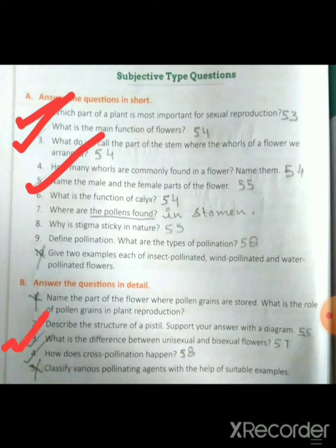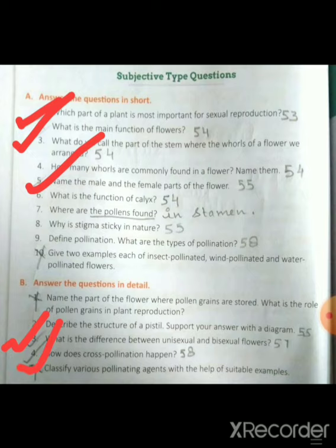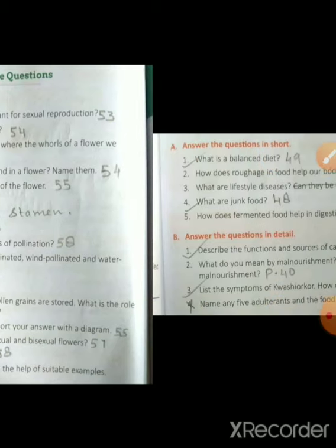What is the difference between unisexual and bisexual flowers? Second is why does cross-pollination happen? The short answers are RW6 and long answers are RW7.